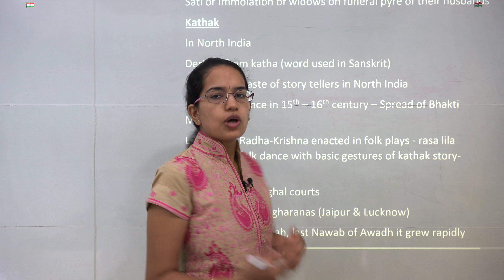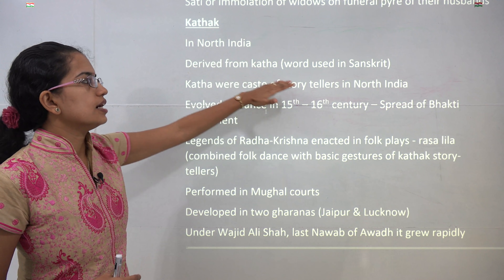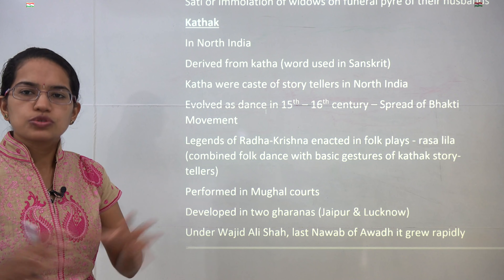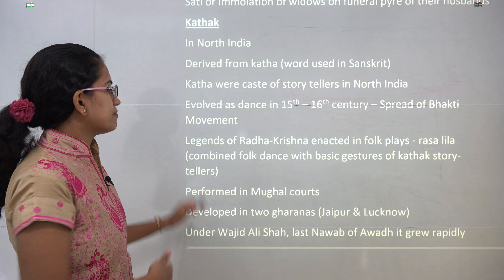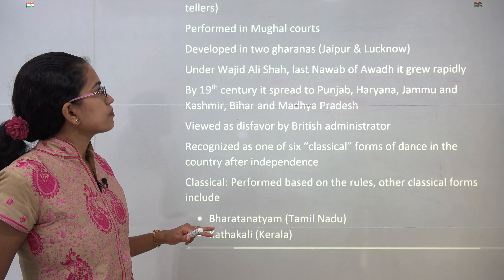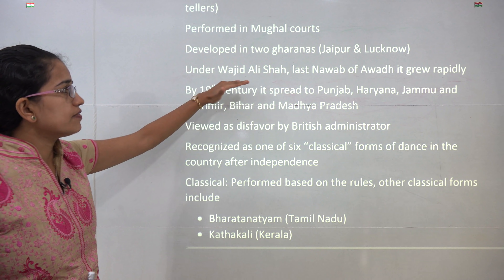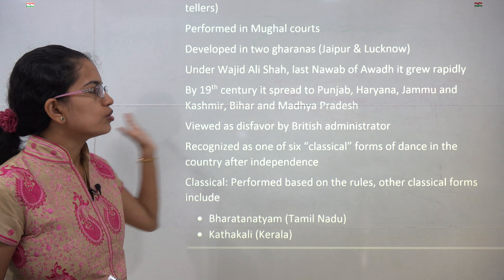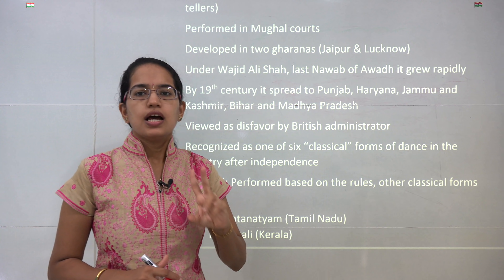Under dance, you have Kathak, which emerged in Northern India and was derived from the word Katha used in Sanskrit. The word Katha depicts a caste of North India who were primarily storytellers who used to roam around and tell stories. This dance practice evolved in the 15th and 16th century more with the spread of the Bhakti movement, and later included Radha-Krishna folk plays as part of it. It was also performed in the Mughal kingdom, and two Gharanas were developed for Kathak: the Jaipur Gharana and the Lucknow Gharana. Under Wajid Ali Shah, the last Nawab of Awadh, this concept grew rapidly, and by the 19th century it spread to most of North India — Punjab, Haryana, Jammu, Kashmir — all were touched by it.